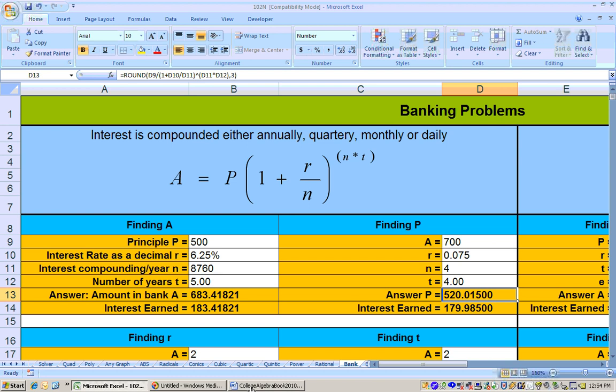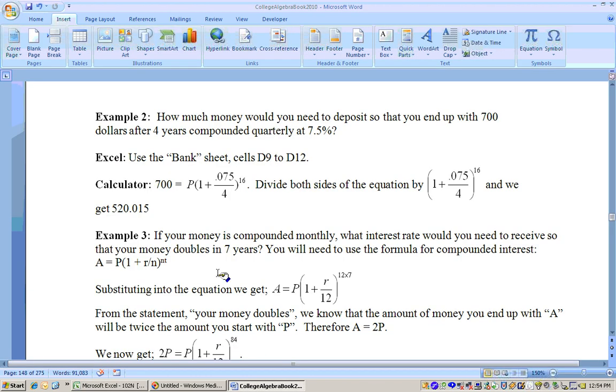So let's also check this, how you would do this problem by hand. To do it by hand, we would have to substitute these values in of 0.075, the 4, and for there for the n, and it's raised to the nt. Well, that's 4 times the t is 4 for four years, and we have to solve it for p. So what you would do is divide both sides by this hunk of stuff right here. We'd have to take 700 divided by this quantity raised to the 16th power, and you'll get the principal.